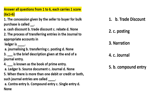What is the journal? The book of primary entry is known as the journal. When there is more than one debit or credit, or both, in a transaction, the journal entry is known as the compound entry. The book of primary entry records the compound entry.